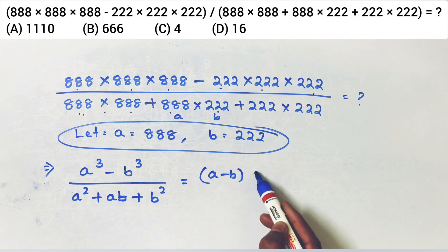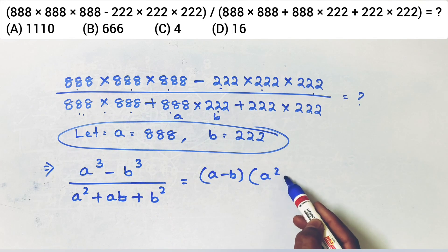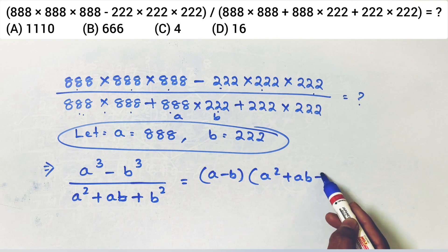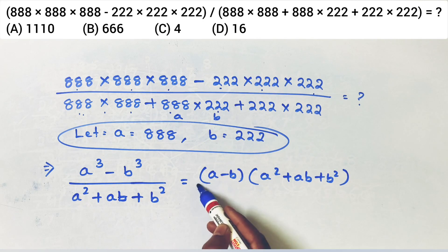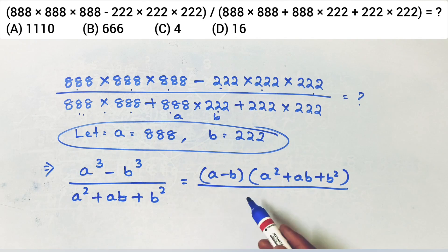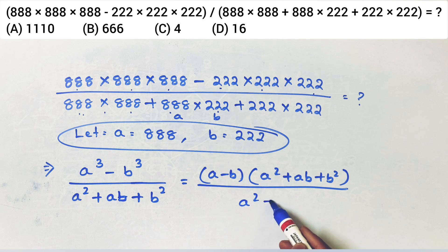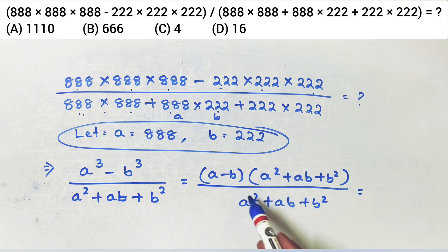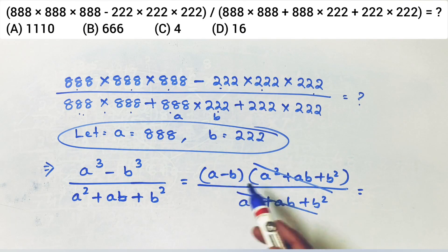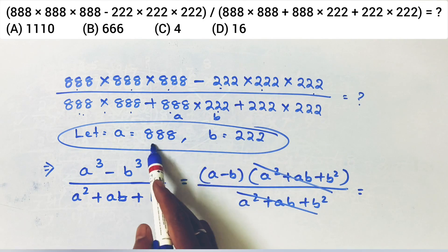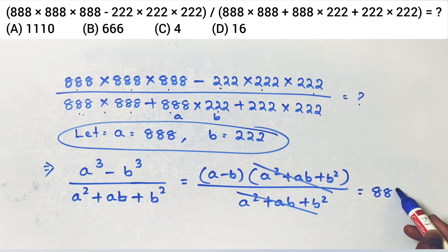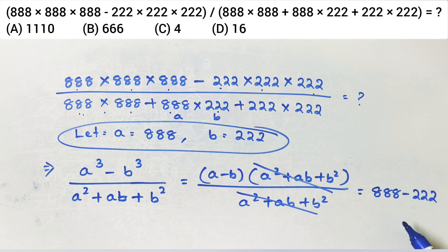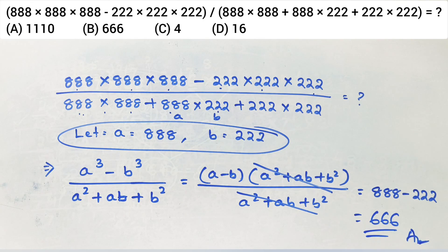Using the formula: a minus b into a square plus ab plus b square. Cancel the a square plus ab plus b square terms. Then a minus b, where a value gives a minus 222 is equal to 666. Answer. Thank you.